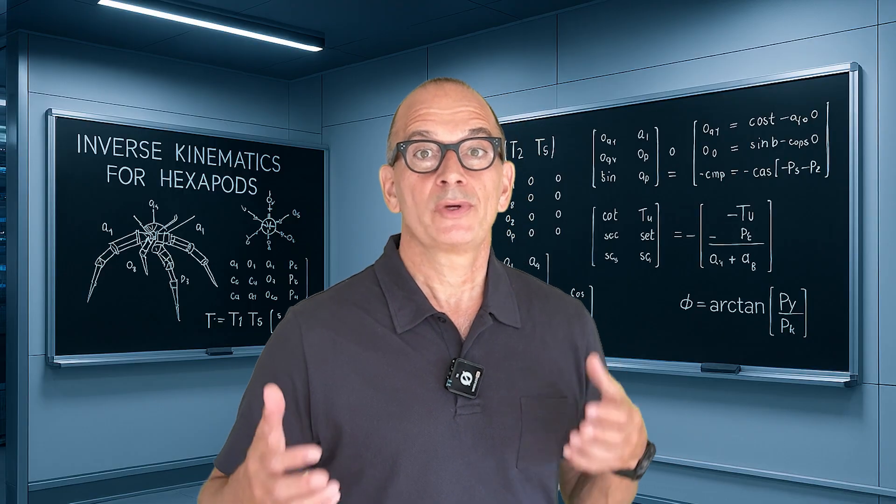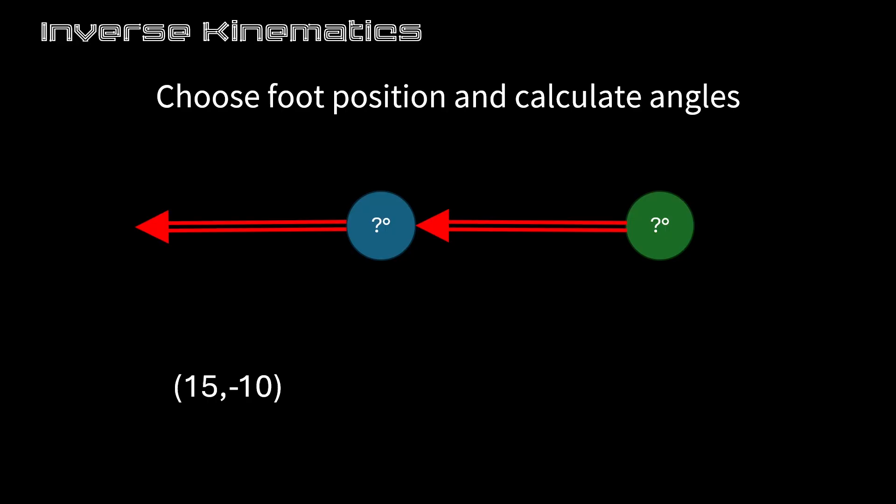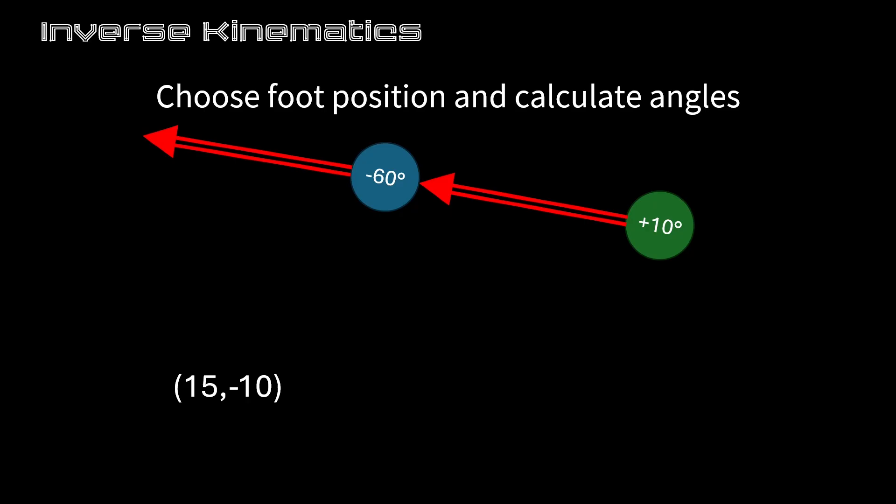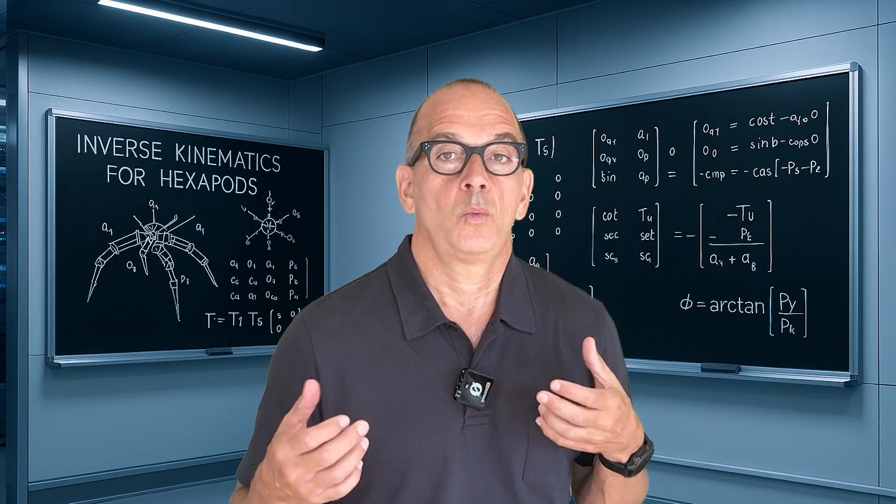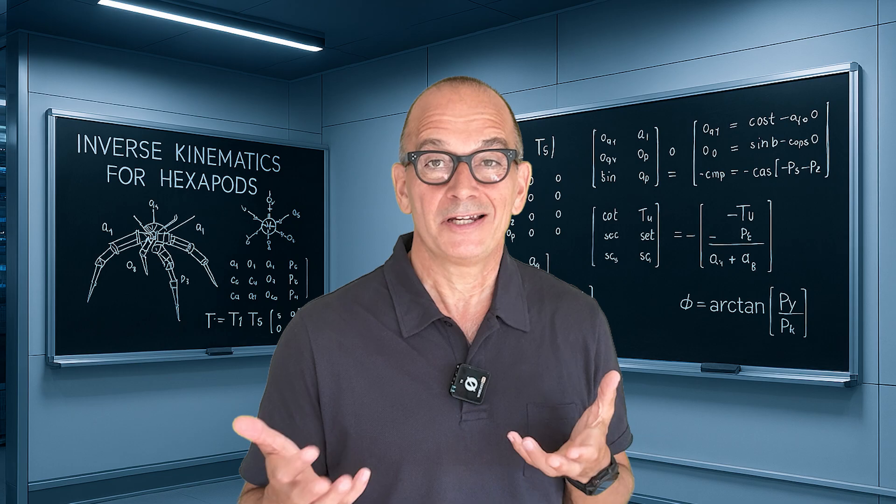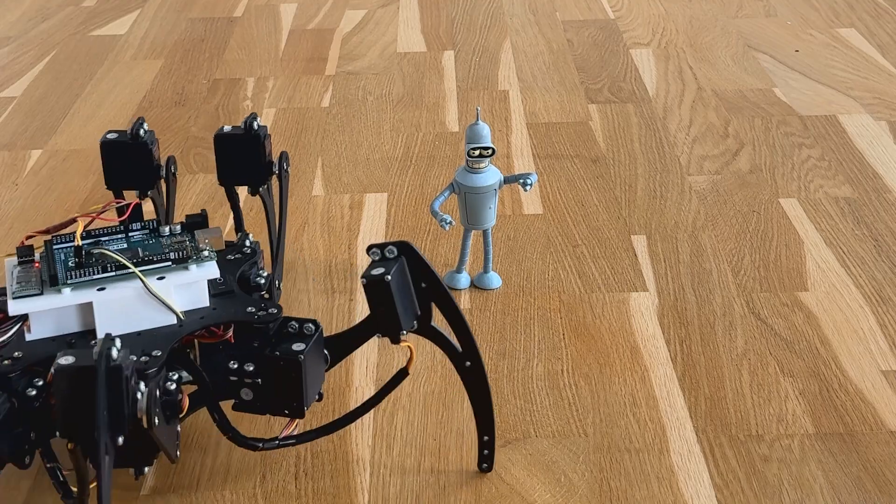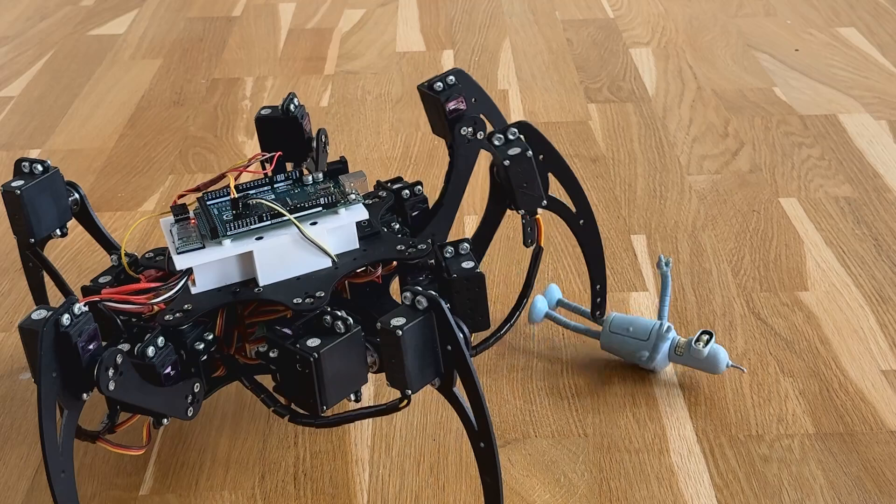So let's switch gears to inverse kinematics. Here we tell the robot where we want the foot of each leg to be placed and then we use math to calculate the joint angles needed for the foot tip to reach that position. With inverse kinematics it's actually initially harder to implement, but once it works it becomes very easy to create more complex movement like this attack animation.